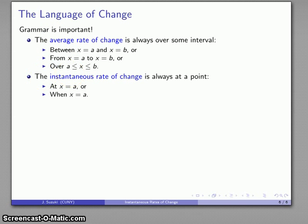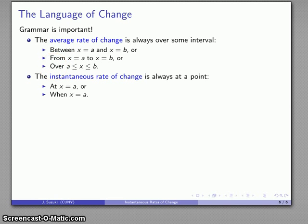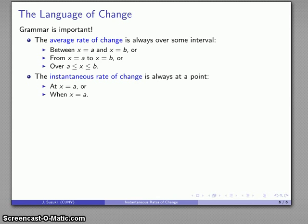We don't always have the luxury of being asked in precise mathematical language — the world asks questions in English. We might be asked to find a rate of change, or how rapidly something is changing. One way to distinguish average from instantaneous rate of change is the grammar used: average rate of change goes with between, from, or over — for example, 'how rapidly are you moving over the next hour?' Instantaneous rate of change goes with at a point or when something happens — for example, 'how fast were you moving when you got that speeding ticket?' Grammar is essential, even in mathematics.